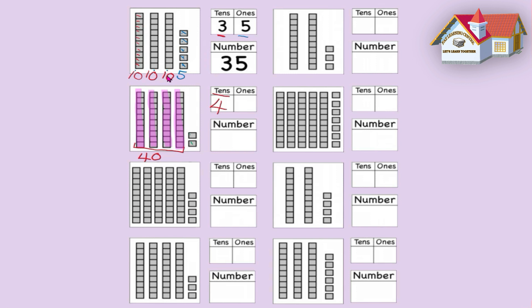One, two. We have two ones. Four tens, 40 add 2 equals 42.